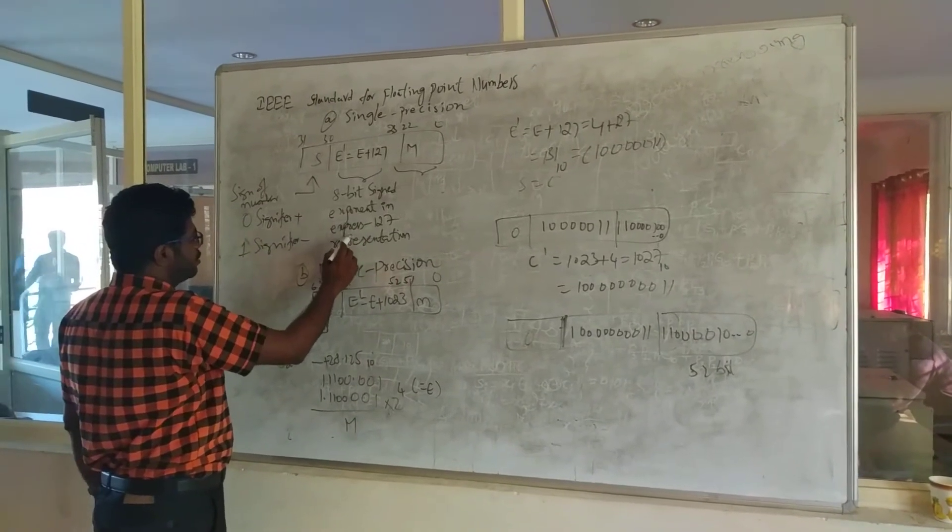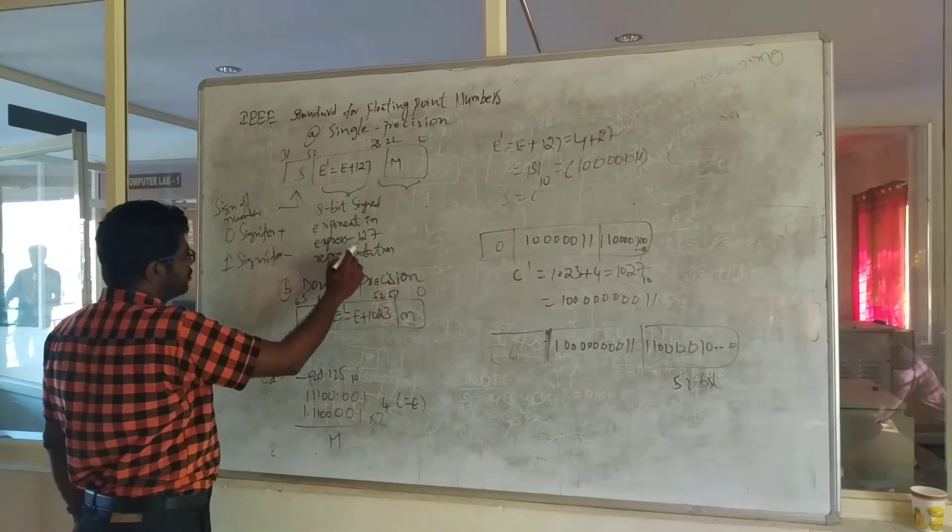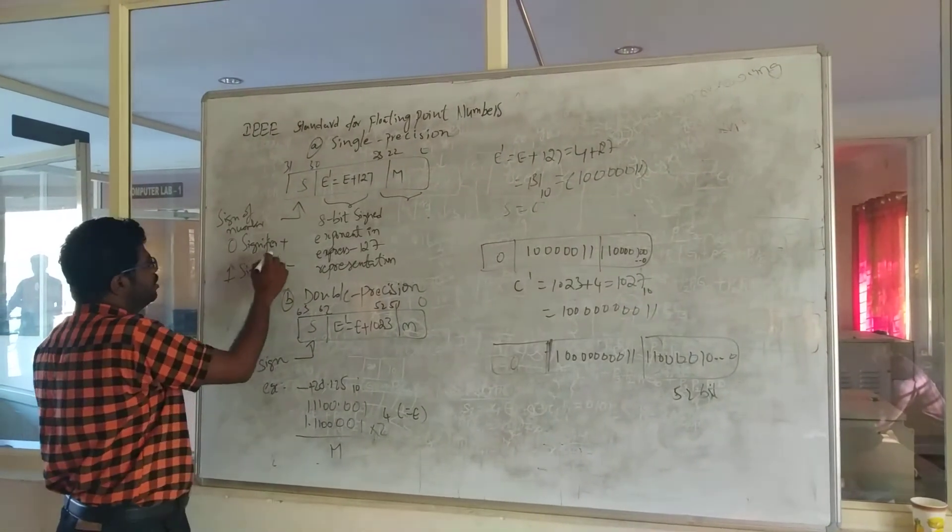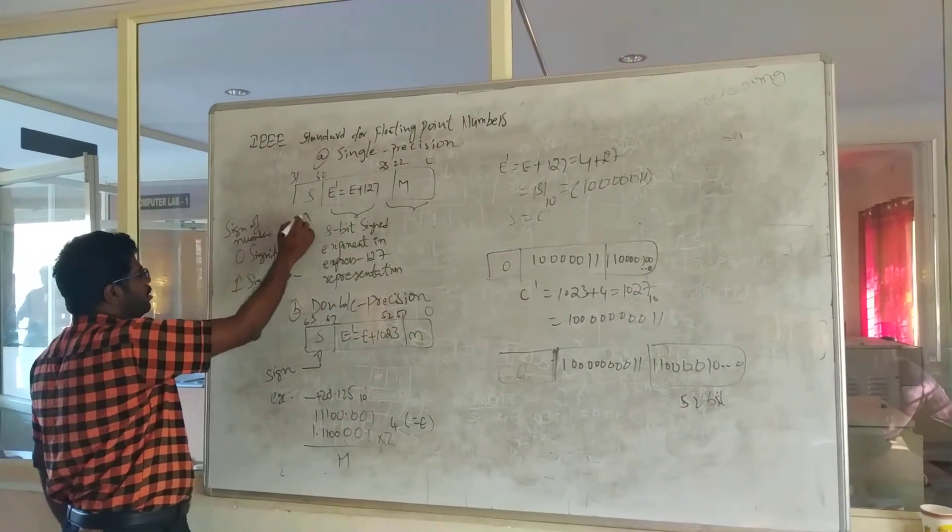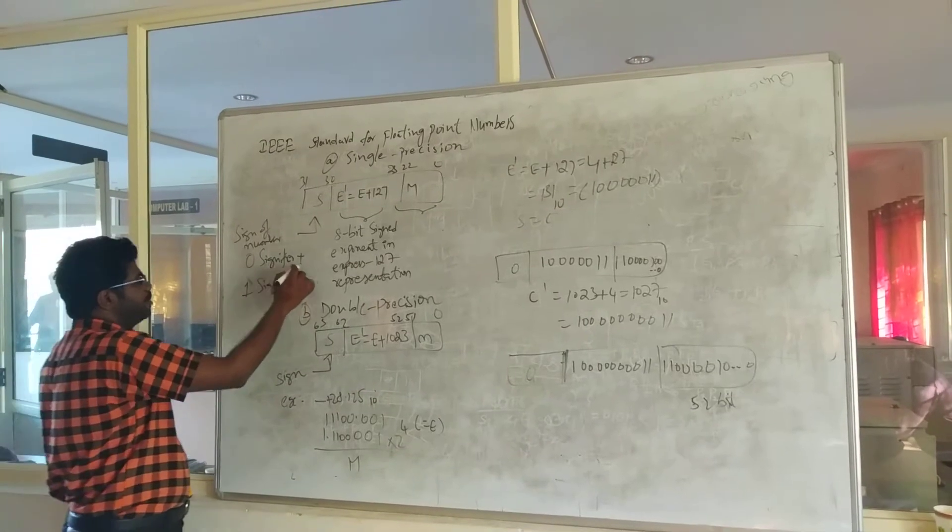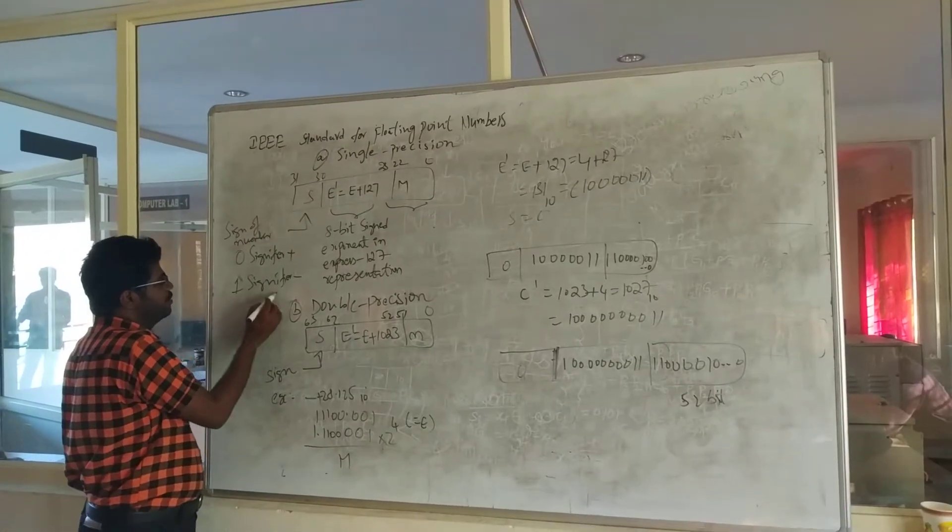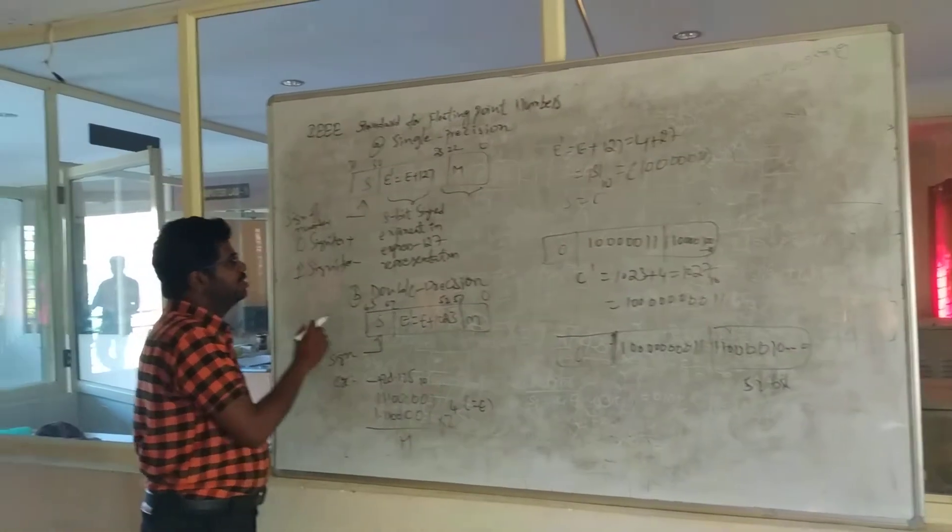The exponent is E plus or minus 127, where 0 in the sign bit represents a positive number and 1 represents a negative number. This is the structure of single precision.